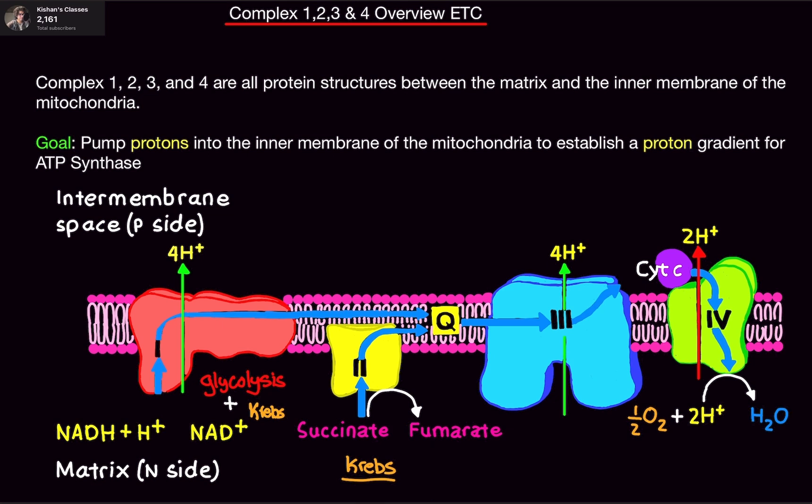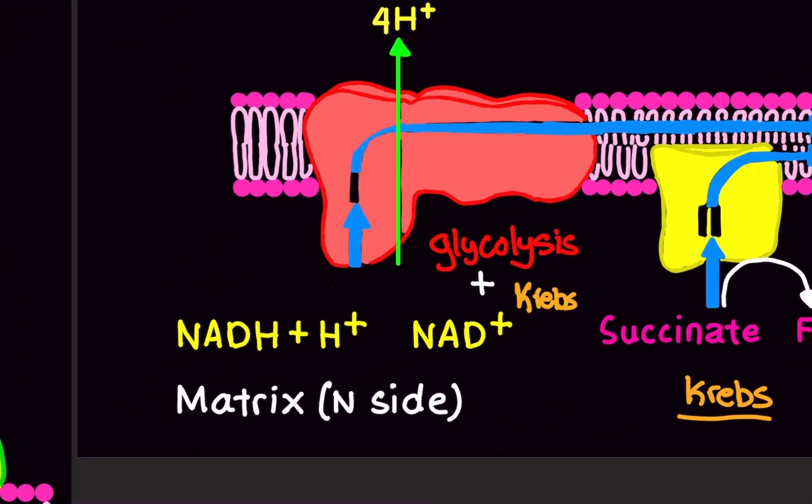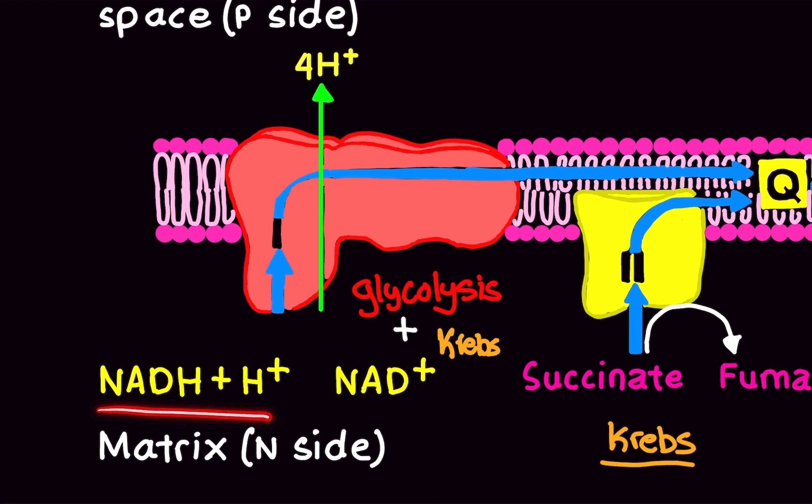What's happened in Complex 1? So in Complex 1, we have here NADH plus H. This NADH plus H is coming from glycolysis and the Krebs cycle. I mentioned in glycolysis, which happens in the cytosol, the NADH plus H is not able to cross into the mitochondria.